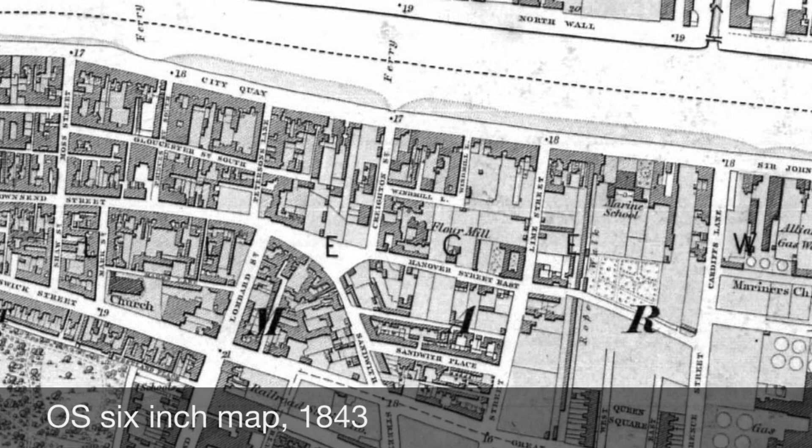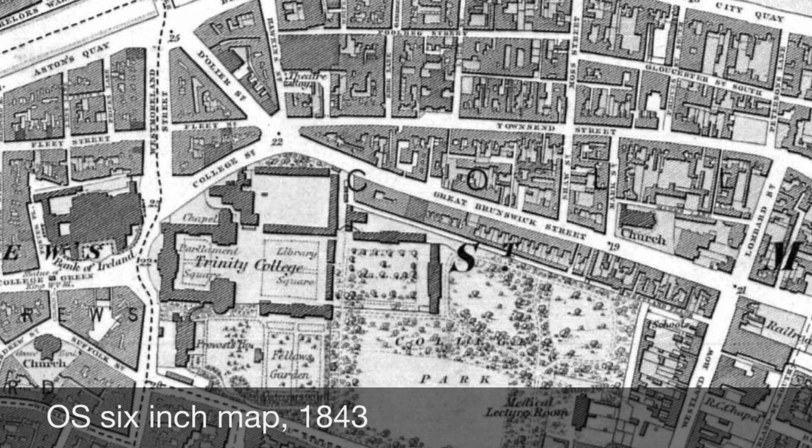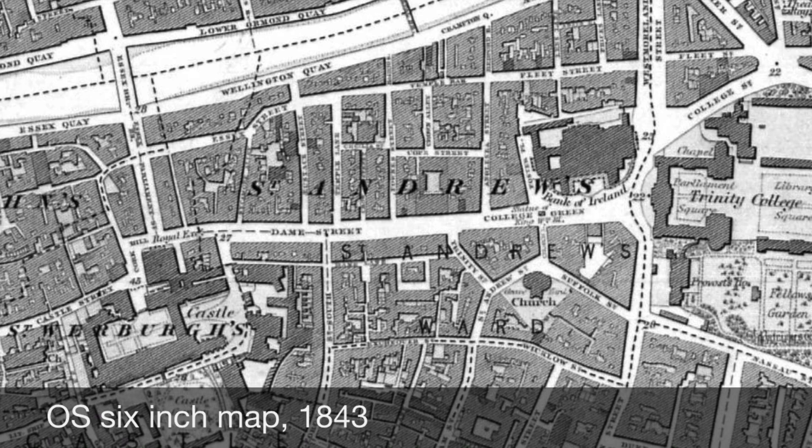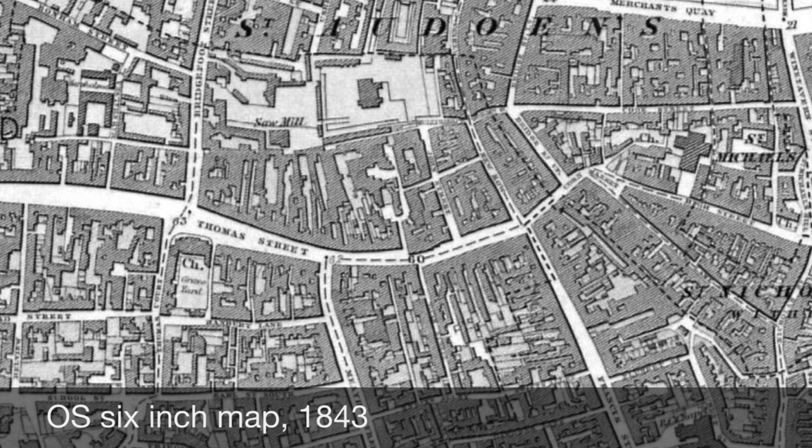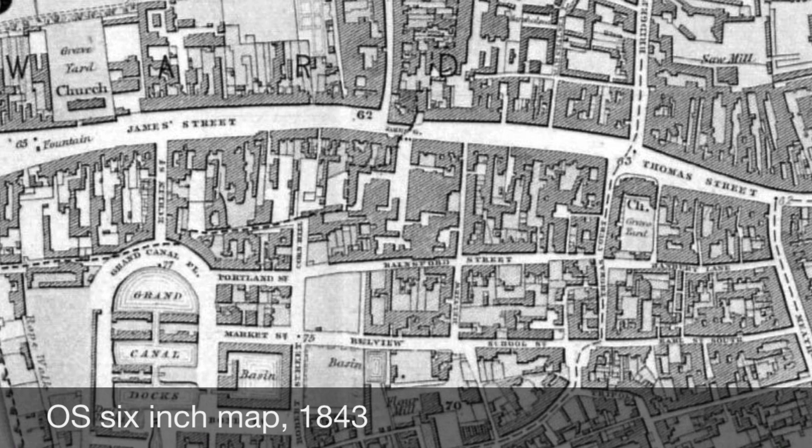Moving west now, we cross the city to examine the south-western suburb of St Catherine's Parish and the Liberties. Here we encounter a very different landscape in the form of a dense industrial zone stretching westward along Thomas Street and James Street as far as Bow Bridge in Kilmainham. The presence of water in the area — from the rivers Liffey, Poddle and Camac, and also the Grand Canal Harbour and City Basin — helps explain the origins of this western suburb as a centre of industry.